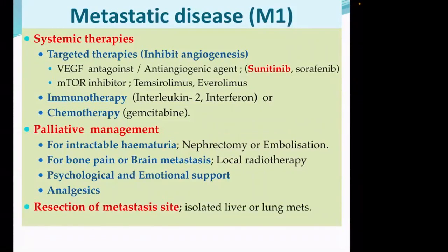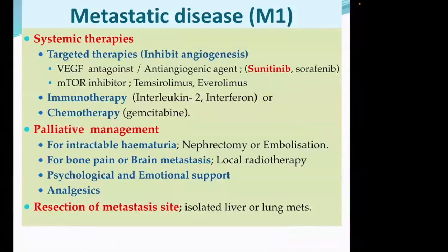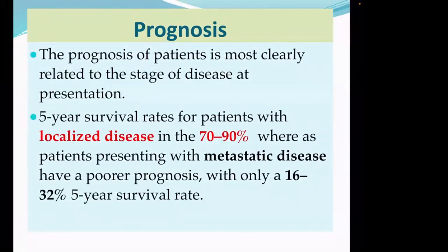Sometimes if the tumor metastasis is very isolated, involving a small area of liver or lung, we can resect that also if it is creating a problem. But normally if there is metastasis, we avoid surgery. For prognosis: it is very straightforward to understand - if a patient has early localized disease, the chance of survival is very high. If the patient has metastatic disease, the chance of survival is very low.